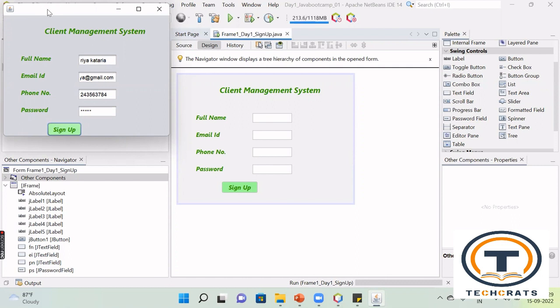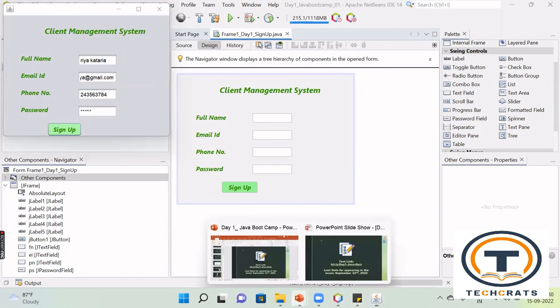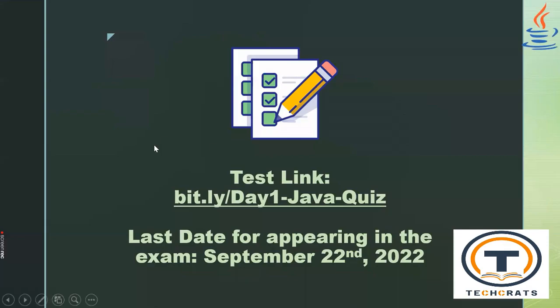To make it dynamic, I will meet you again next week. Before that, I would like to show you something. In order to qualify for the certificate, you have to appear in this exam. The test link is: bit.ly/day1-java-quest. This will help you get the certificate. The exam will be available on the portal until 22nd September 2022. After the 22nd, this exam will no longer be available on the portal. I hope you have enjoyed my session. Thank you so much. See you next week. Take care. Bye-bye.